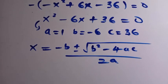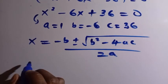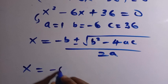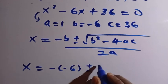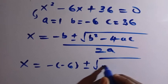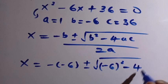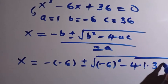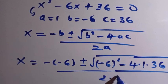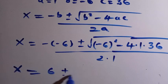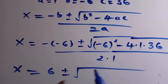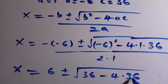Now let's substitute all parameters into the formula. We have x equals minus (minus 6) plus or minus the square root of (minus 6) squared minus 4 times 1 times 36, divided by 2 times 1. This simplifies to x equals 6 plus or minus the square root of 36 minus 4 times 36, divided by 2.